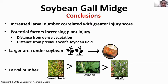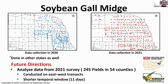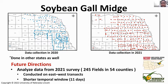For average field injury, the distance from dense vegetation was the major factor, followed by the percentage of soybean grown in that area, and percentage of pastures. In conclusion, increased larval numbers were correlated with greater injury scores. The larger the area of soybean planting, the greater the number of larvae found. Larval numbers were highest in sweet clover compared to soybean, followed by alfalfa. In the future, we plan to analyze 2021 survey data covering 245 fields in 54 counties, done on east-west transects in a shorter temporal window of 11 days to avoid time as a confounding variable.